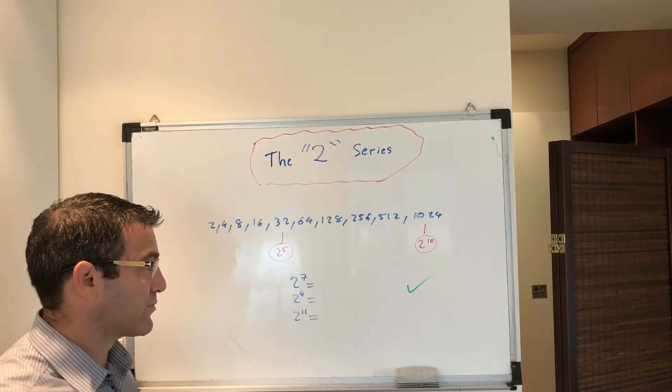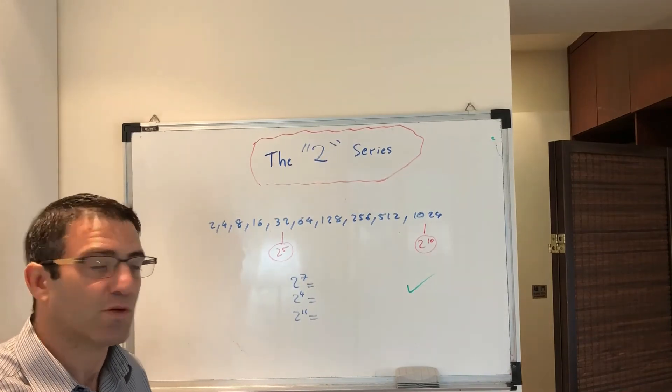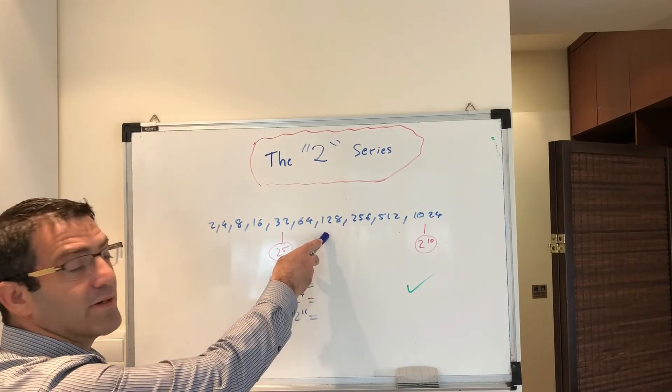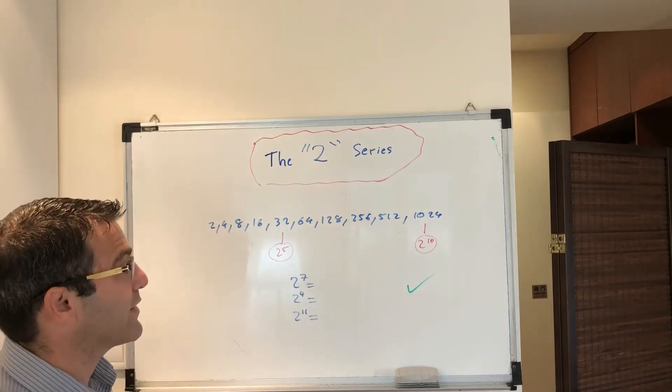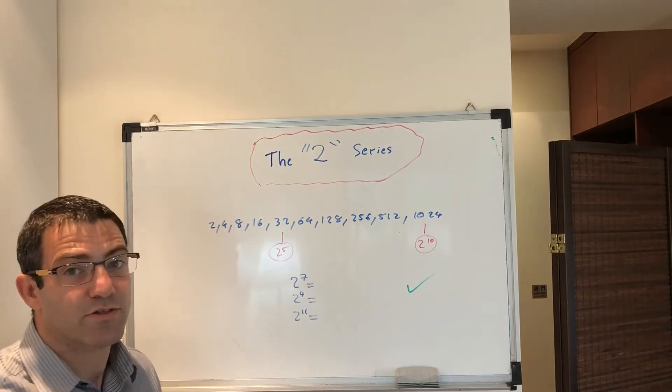What's 2 to the power of 6? It's 64. What's 2 to the power of 7? 128. What's 2 to the power of 8? That one. 256.